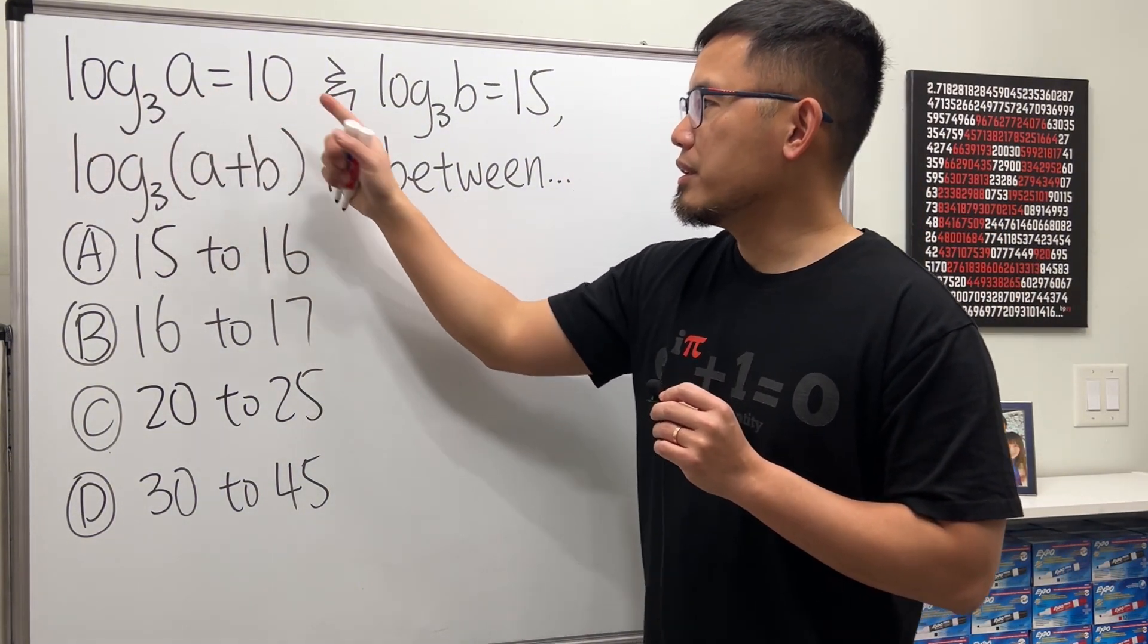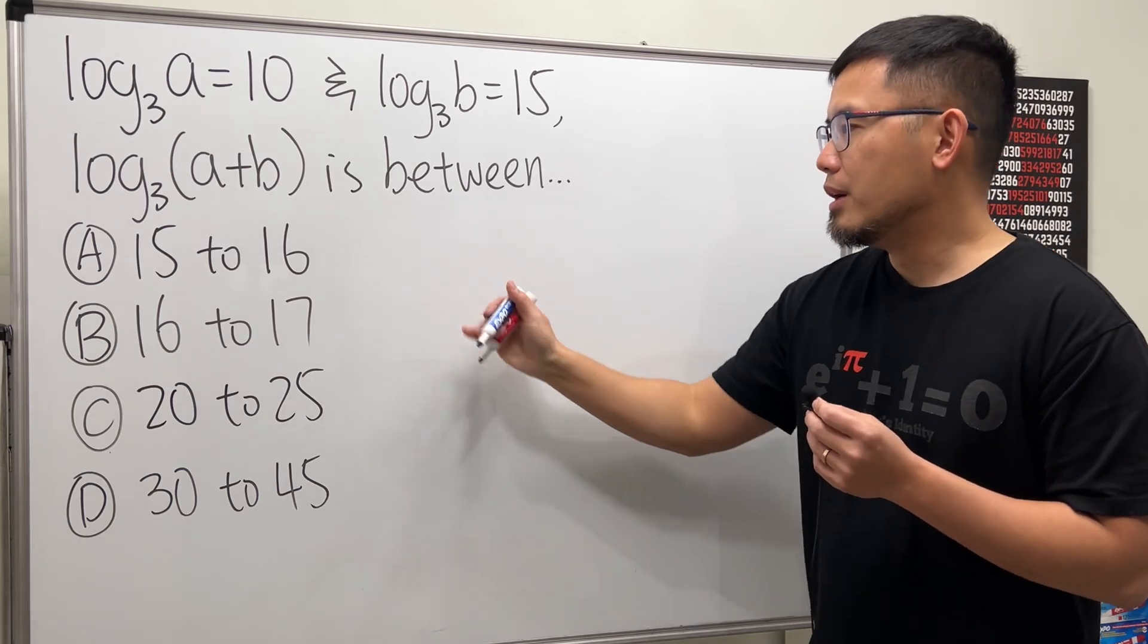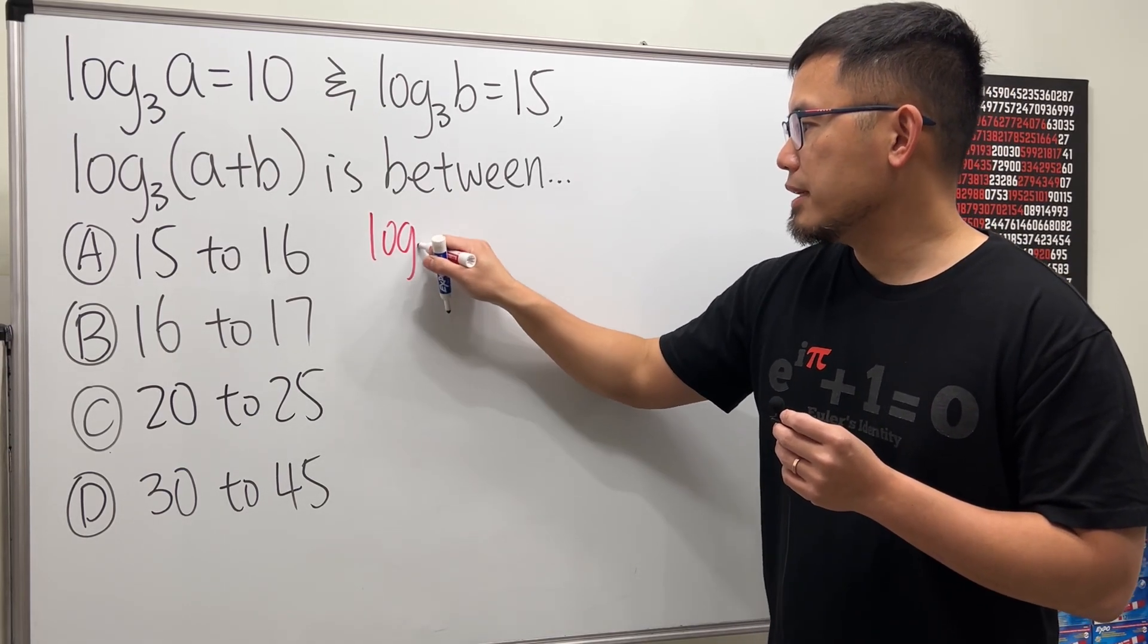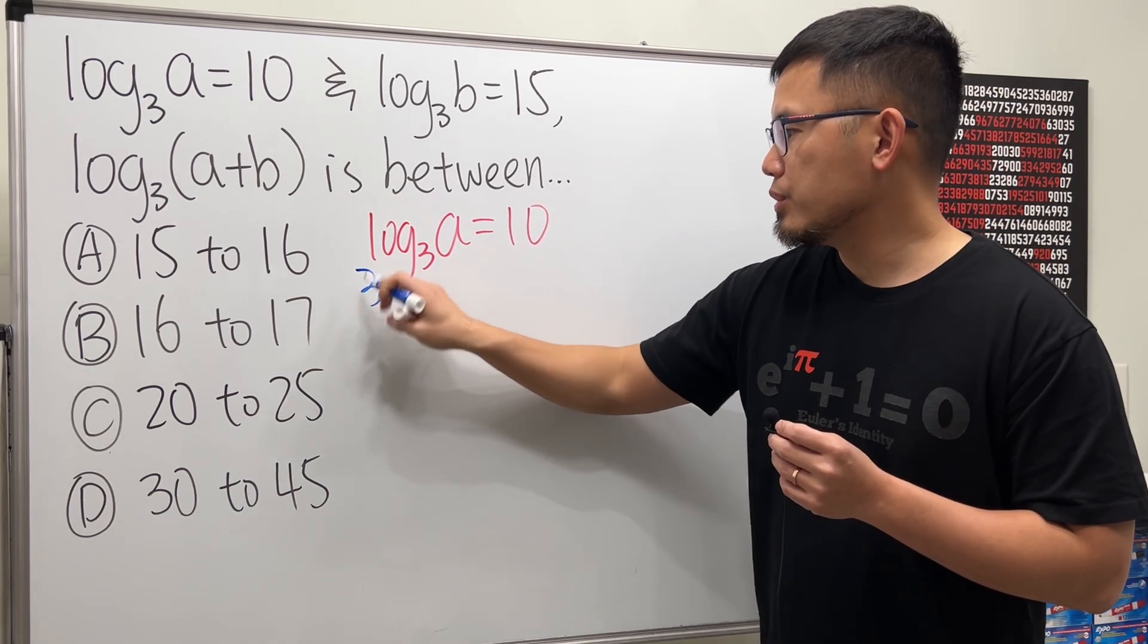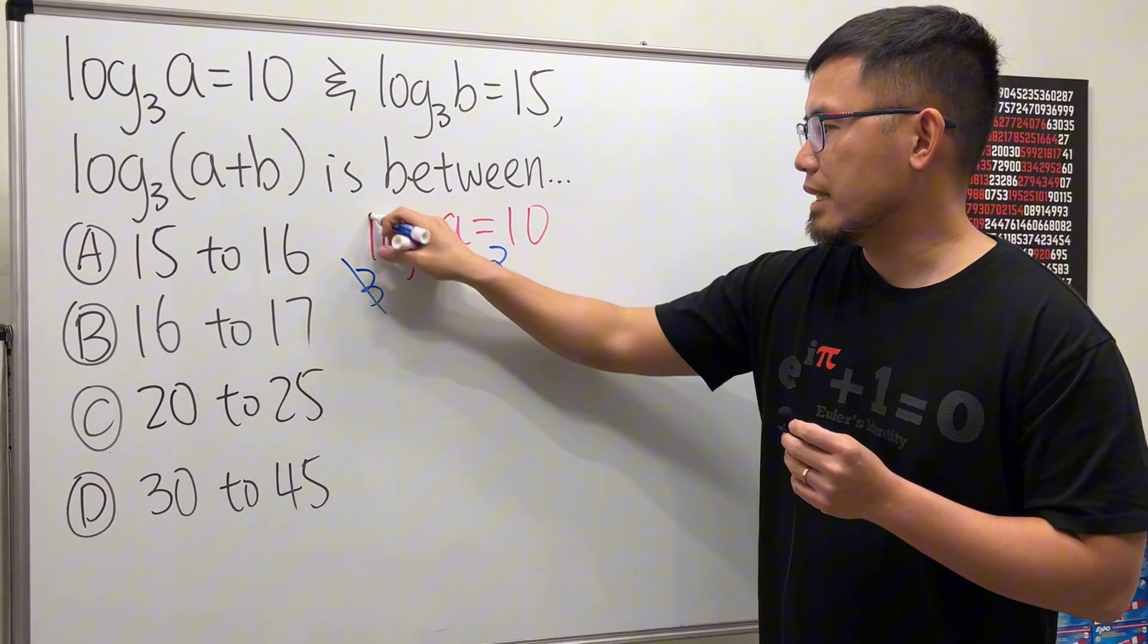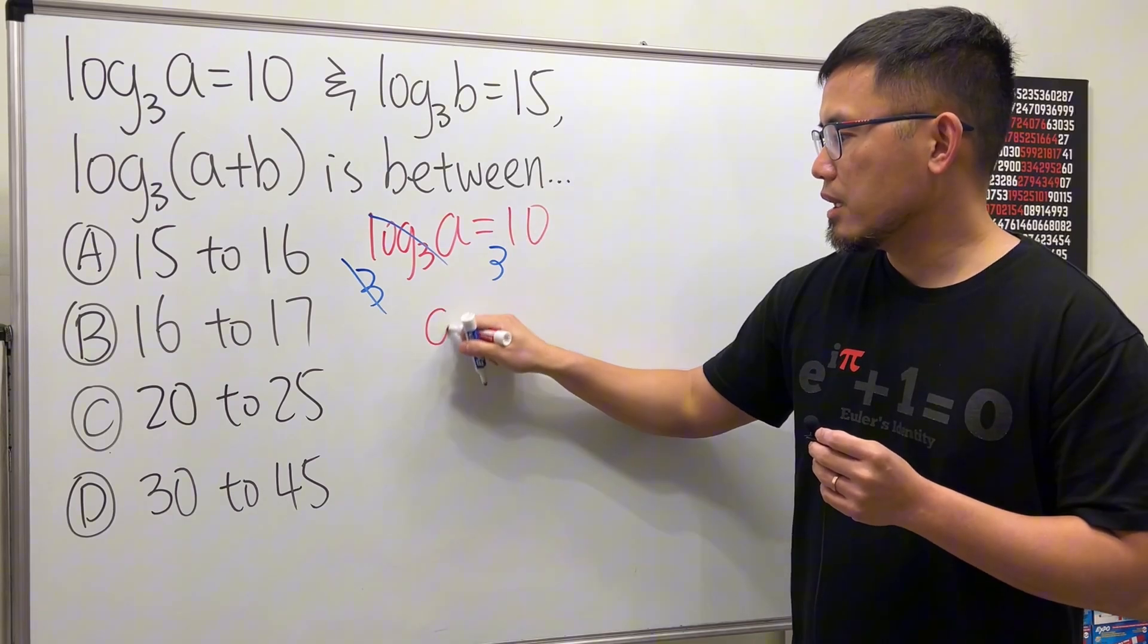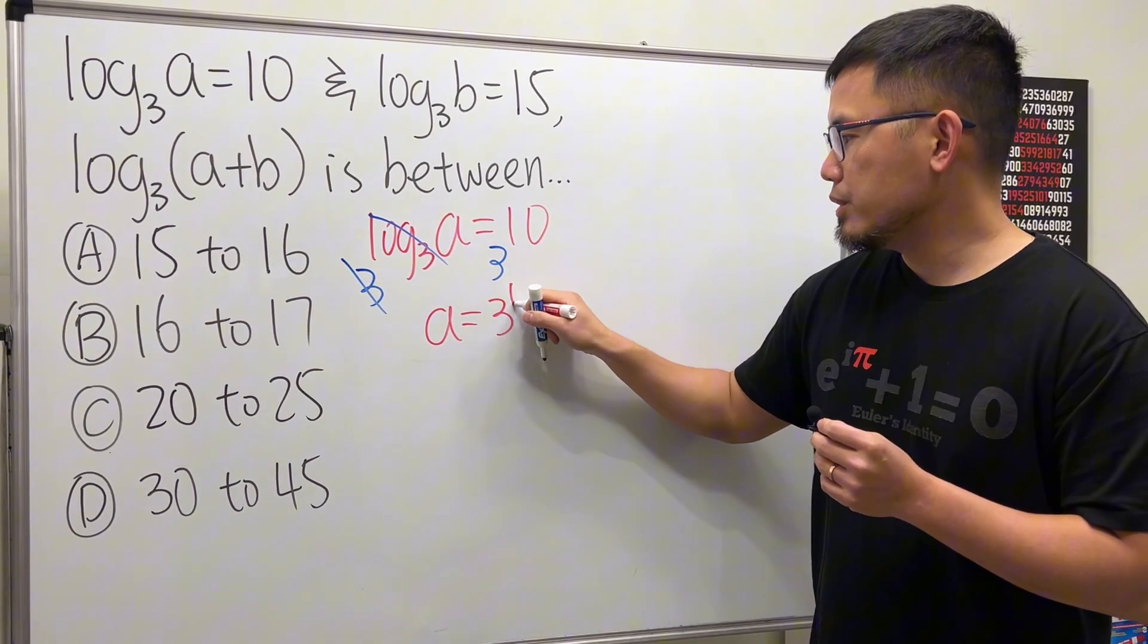I'm going to start with turning this into the exponential form. So from log base 3 of a being 10, we can just do 3 to this power and 3 to that power, this and that will cancel. So we can say a equals 3 to the 10th power.